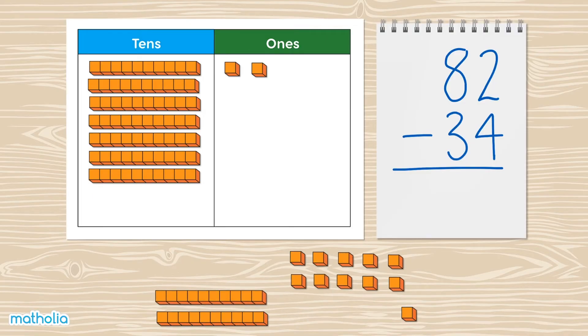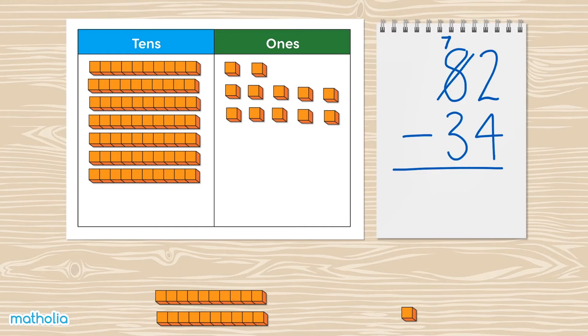one blocks. Move them into the ones column. We now have seven tens and twelve ones. Now we have enough